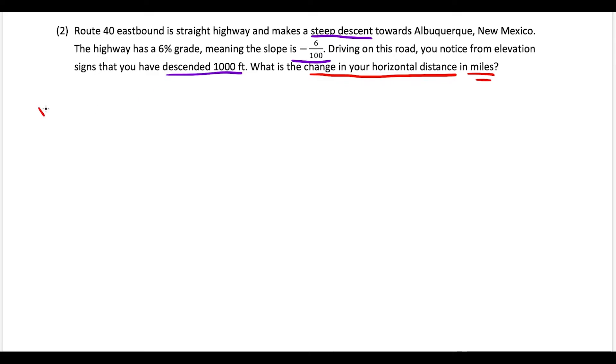The actual question is: what is the change in our horizontal distance in miles? For this, we can use the equation y = mx + b. The slope m is -6/100, and our b value we can set equal to 1000 because we're starting from a height 1000 feet above. So the line is y = -6/100x + 1000.